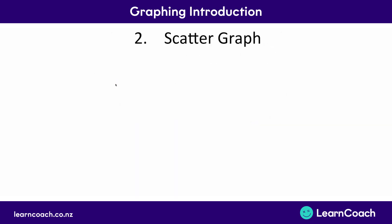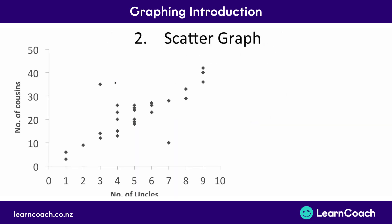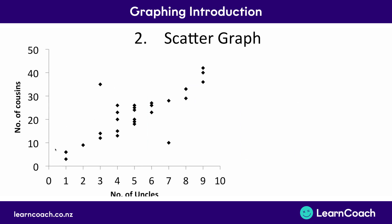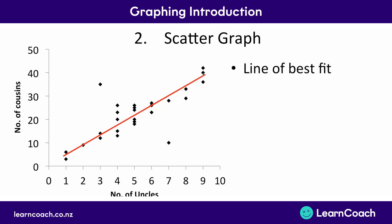Our second graph is a scatter graph. This is again measuring two different things — in this case, the number of cousins people have compared to the number of uncles they have. In a scatter graph you're looking for a trend. Here, as the number of uncles increases, the number of cousins seems to increase as well, and this is shown by the line of best fit, which really shows us the trend of how things are increasing or decreasing.